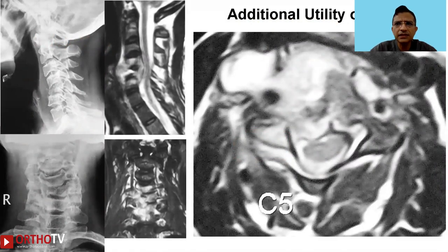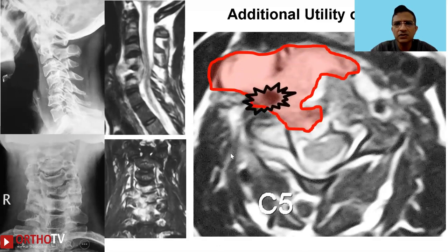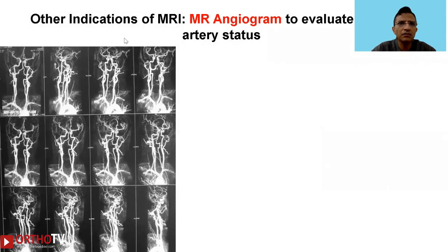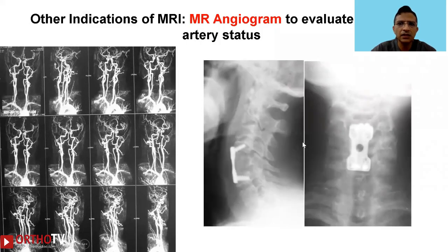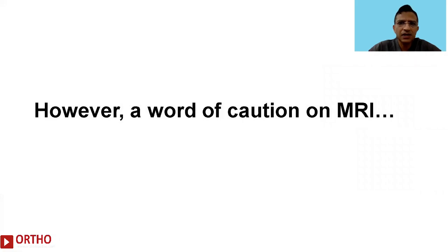There are additional utilities of MRI as seen in this illustrative case: there is an infectious lesion in the subaxial spine with a large, slightly asymmetrical abscess that is engulfing the vertebral artery. In these situations, one may utilize MRI to perform an MR angiogram to evaluate the vertebral artery status. Once confirmed to be intact, we can proceed with the operative intervention as seen here.